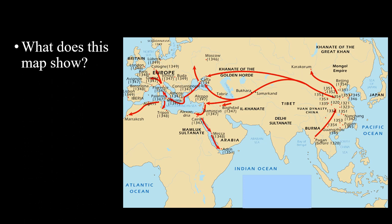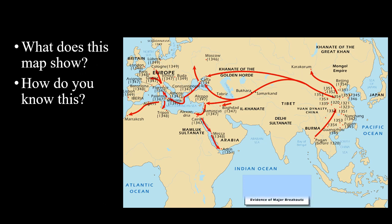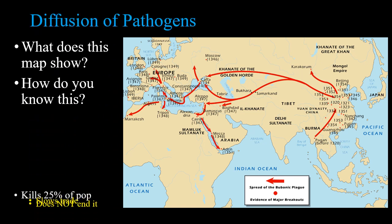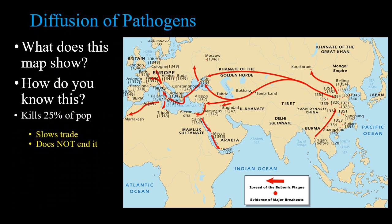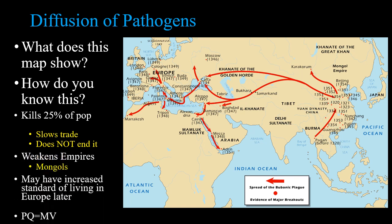What about diseases? This map shows the spread of the bubonic plague, which kills about one-third of the population — we're not really sure of the exact number. It slows trade but doesn't end it. It does weaken empires, including the Mongols, and may have actually increased the standard of living in Europe later.